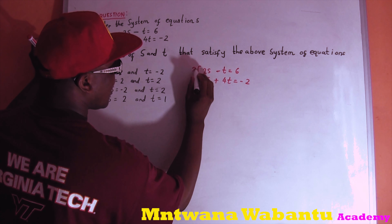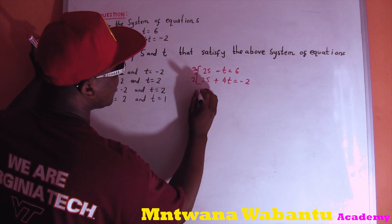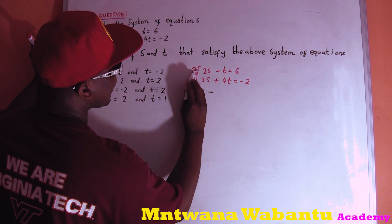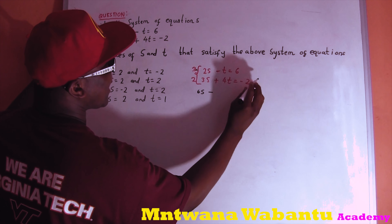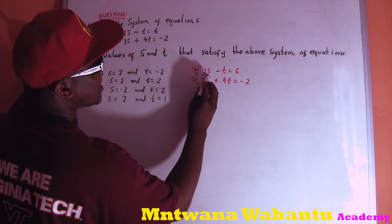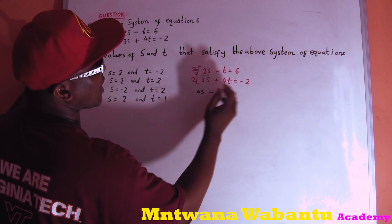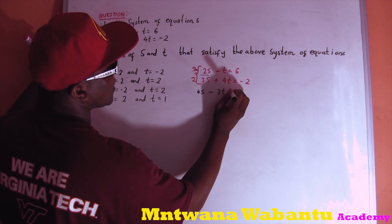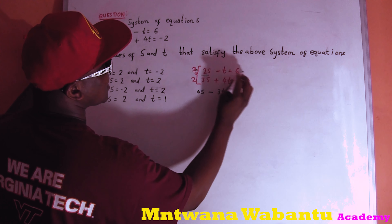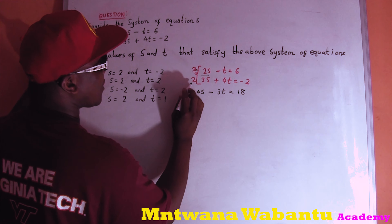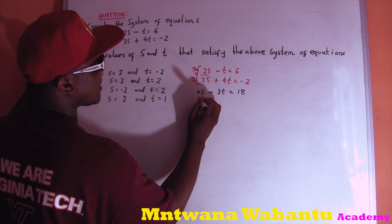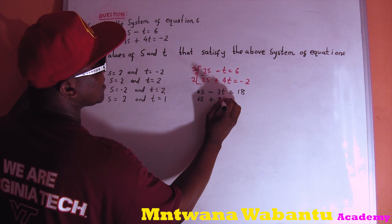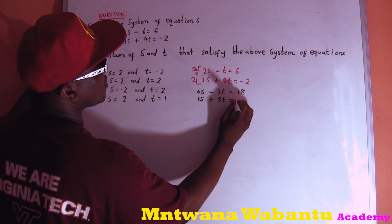Now let's multiply. Three times 2s gives 6s, and 3 times negative t gives negative 3t, and 3 times 6 gives 18. For the second equation, 2 times 3s gives 6s, 2 times 4t gives 8t, and 2 times negative 2 gives negative 4.